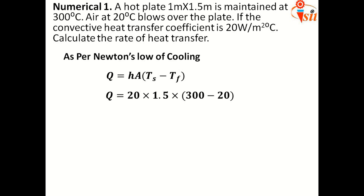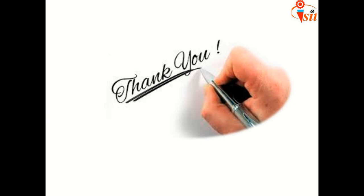H, which is 20 Watt per meter square degree Celsius. A, which is 1 into 1.5, which come in as 1.5 meter square area exposed to the air flow. Ts is the surface temperature, which is at 300 degree Celsius. And Tf is the fluid temperature, which is at 20 degree Celsius. By this way, we will get the answer 8400 Watt, which is nothing but 8.4 Kilowatt. Thank you and stay connected for more videos and keep learning.